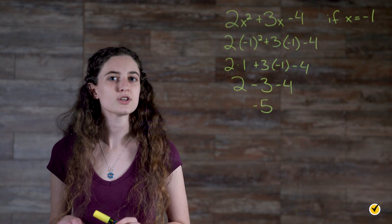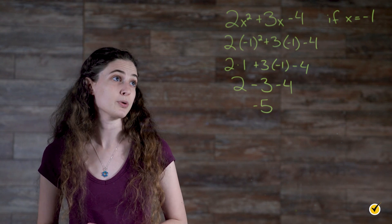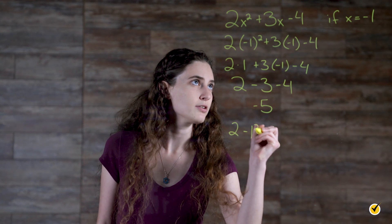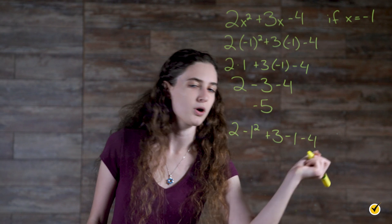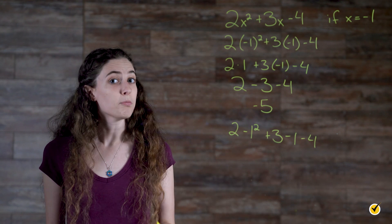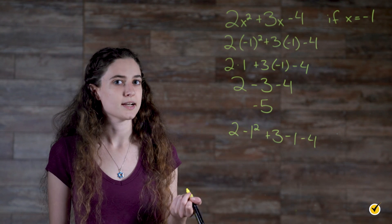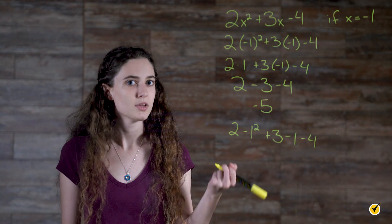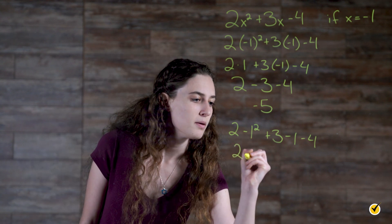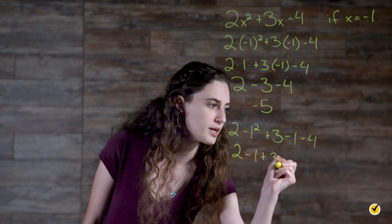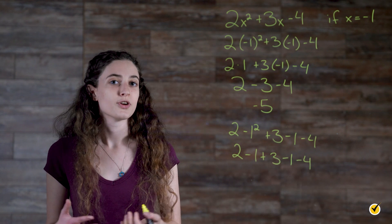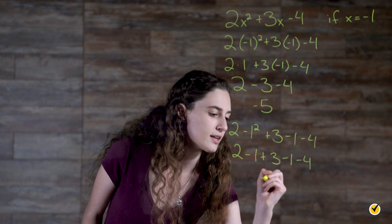In contrast, let's look at the same expression but without the parentheses. So we have 2 minus 1 squared plus 3 minus 1 minus 4. Since there are no parentheses, we have to start with the exponent. 1 squared is just 1. So we're left with 2 minus 1 plus 3 minus 1 minus 4. Which, if you add those all up, you get negative 1.